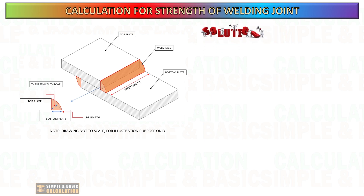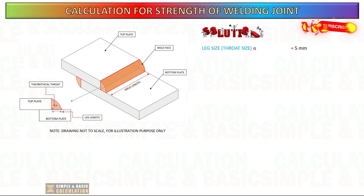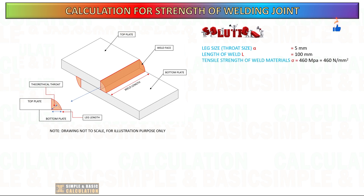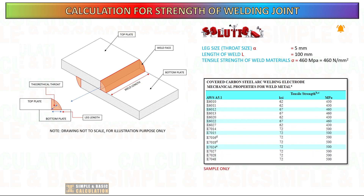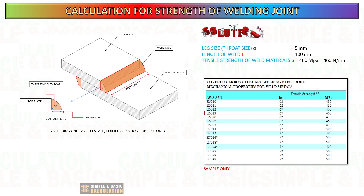Here is the given data. Leg size or throat size equals 5 mm. Length of weld equals 100 mm. Tensile strength of weld material equals 400 MPa or 400 N per mm². There are several types of welding materials in the market; you can check the internet for the specification of your welding materials or get them from your supplier. Here is a sample chart for types of welding material with tensile strength.